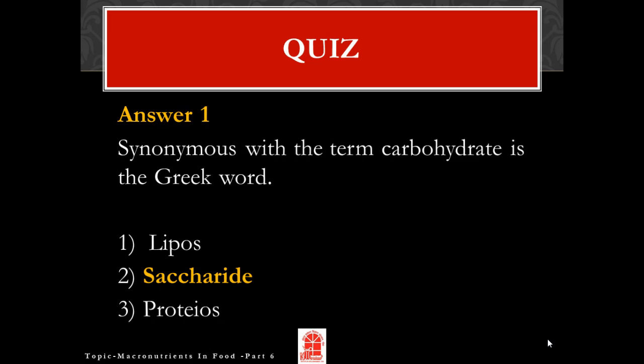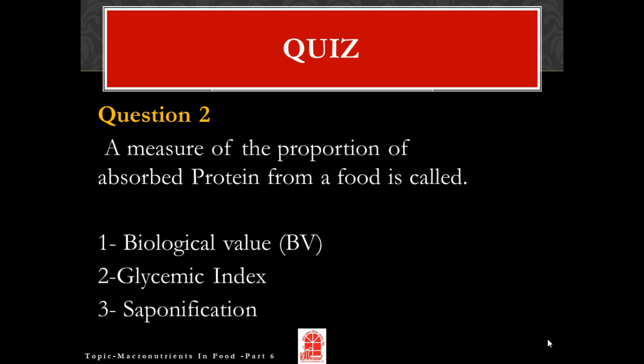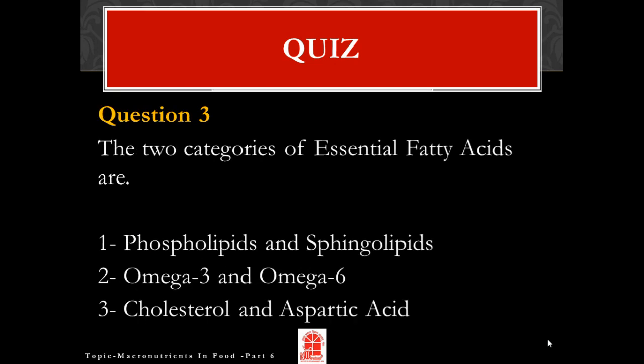If you have chosen saccharides, you are absolutely right. Question number two: a measure of the proportion of absorbed protein from a food is called — if you answered biological value, give yourself another point. Question three: the two categories of essential fatty acids are?